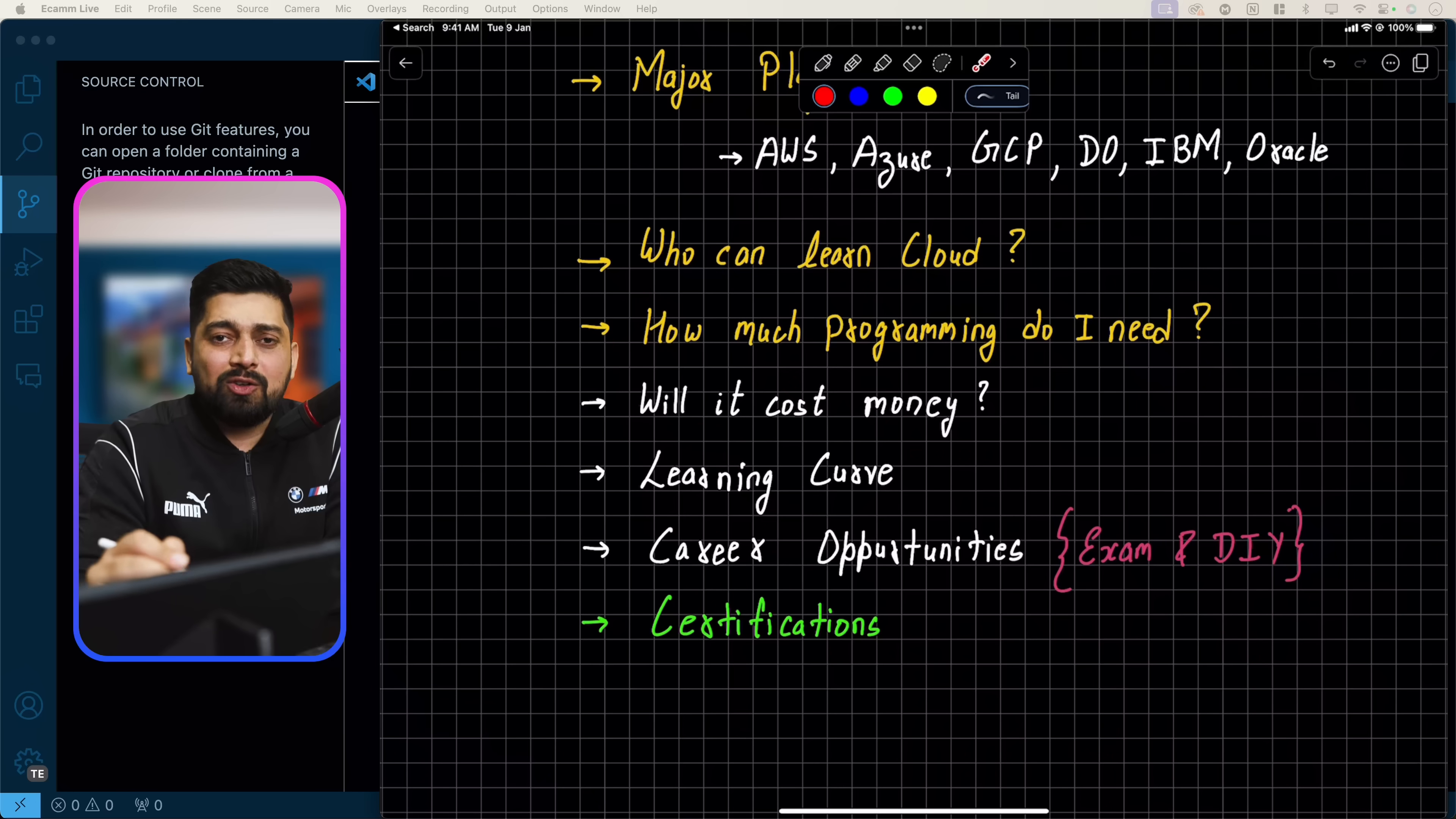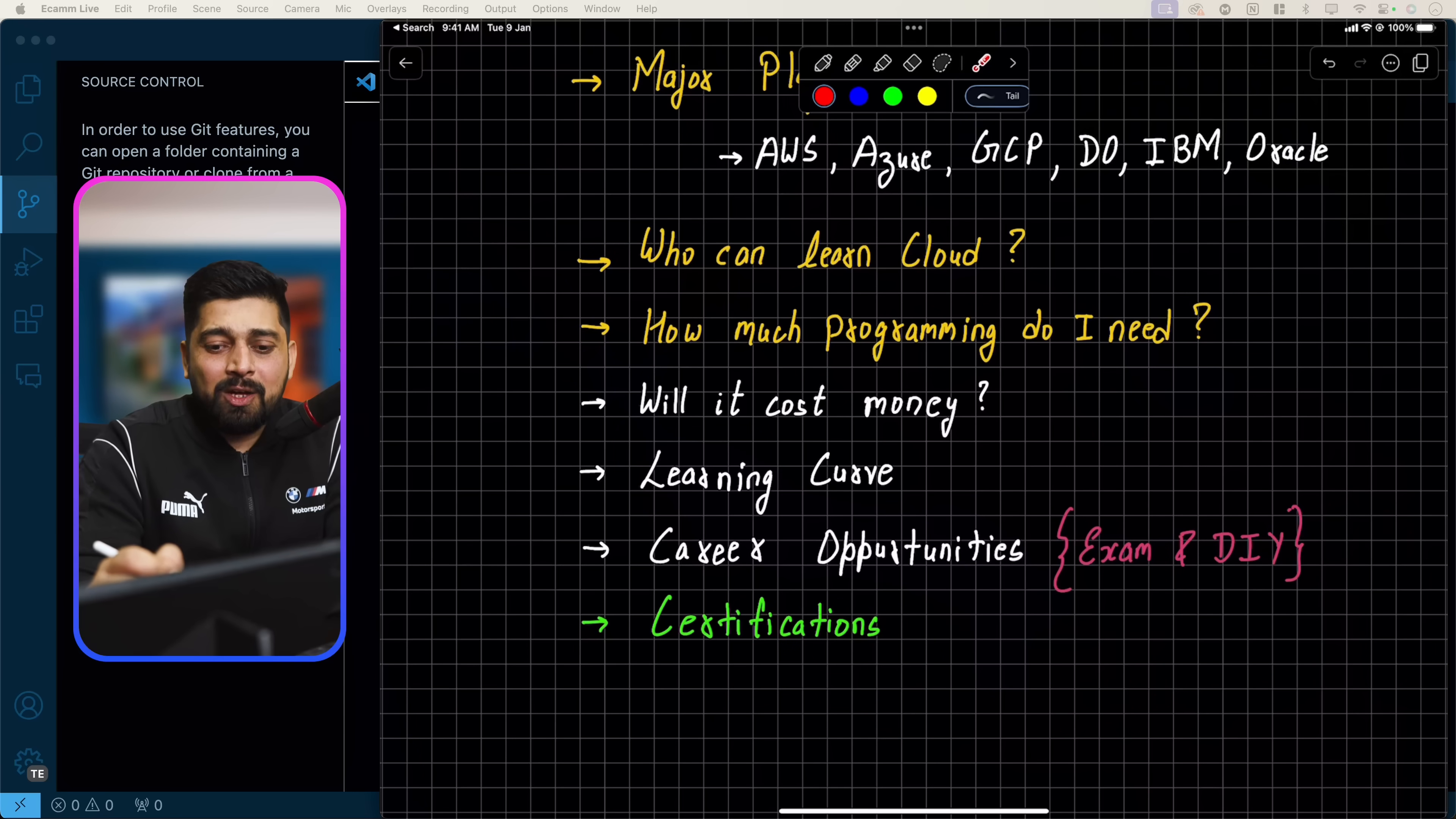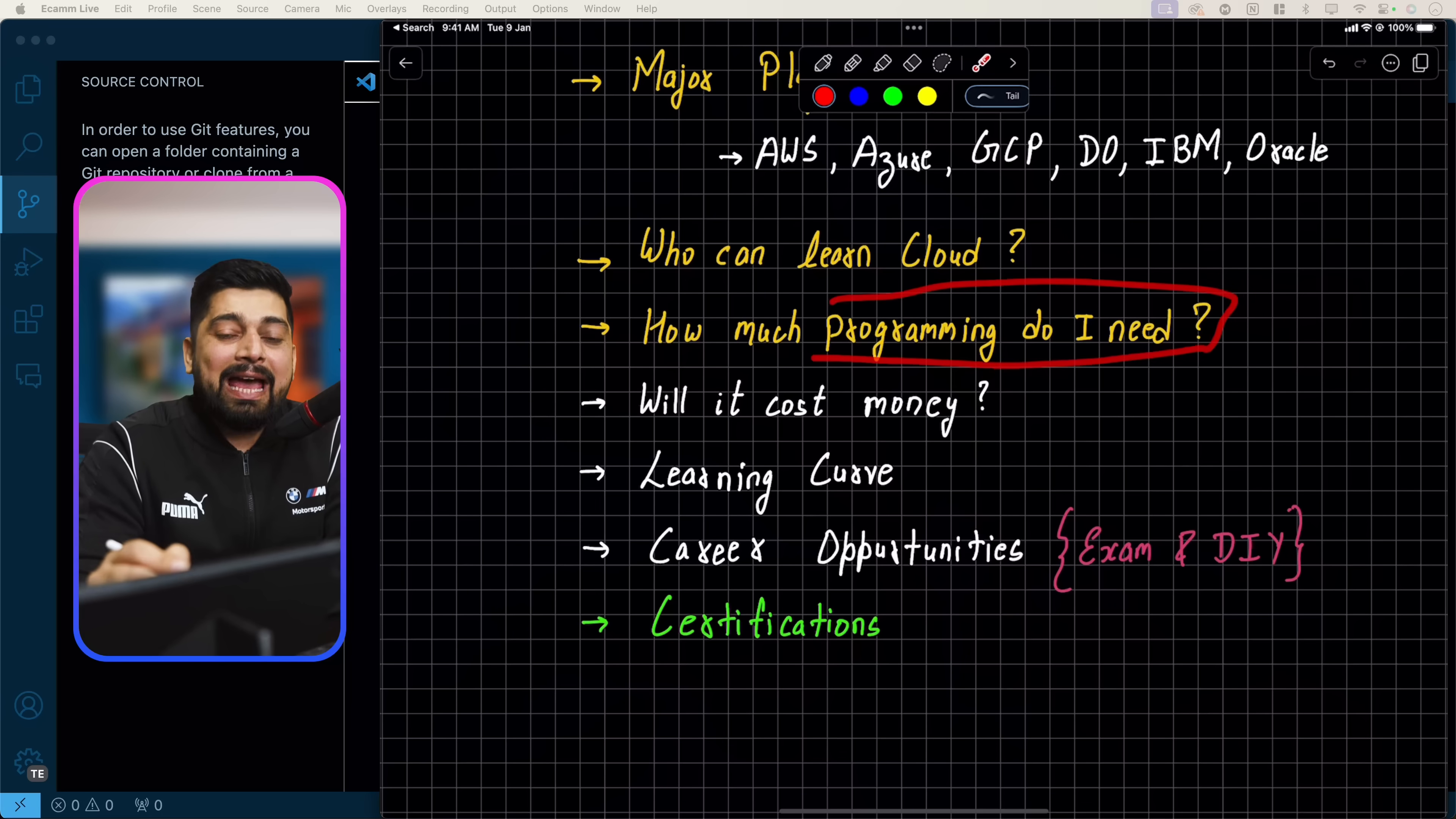Now the next big question is: how much programming do I need to know? You don't need much. If you know, that's great. For example, if you know Python or JavaScript, you'll have some advantage with some of the tools. But no, you don't need programming that much for that. It's cloud infrastructure—it requires more common sense and IQ rather than programming skills.